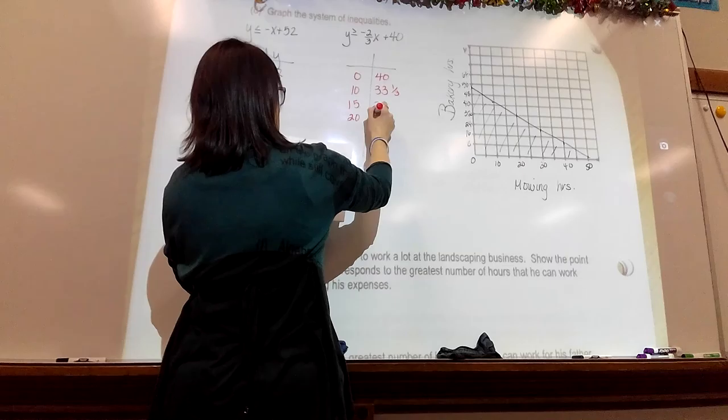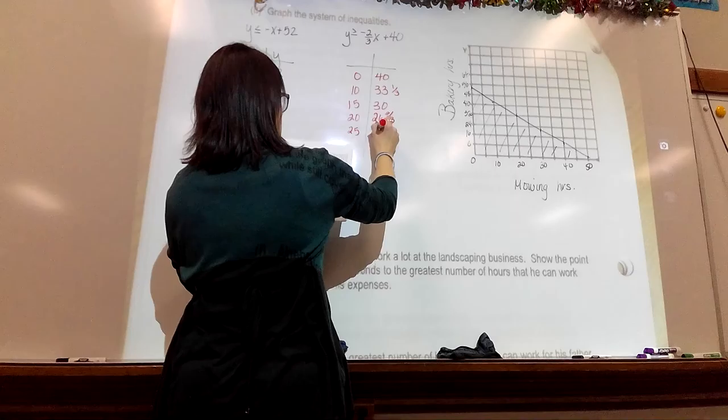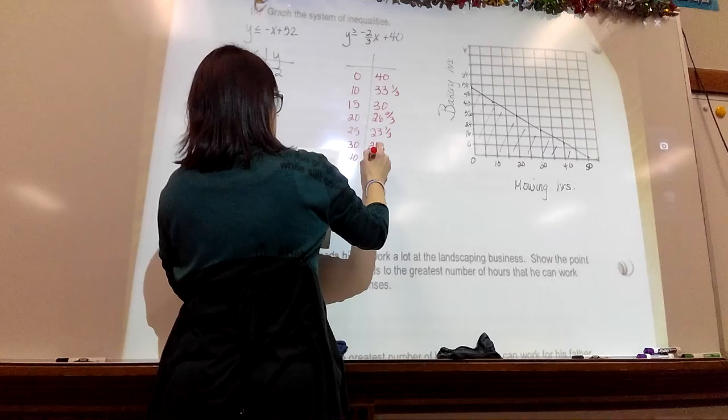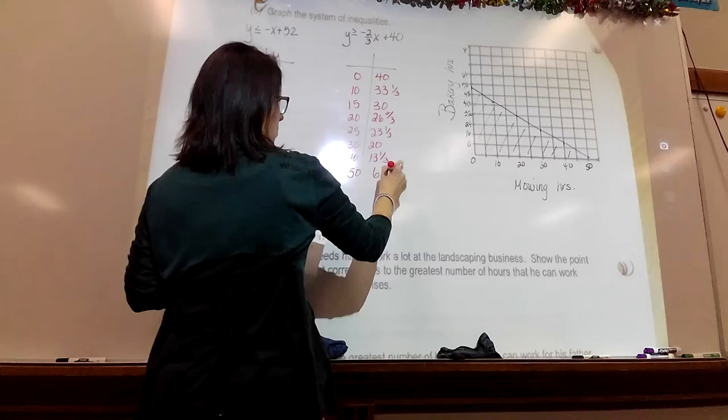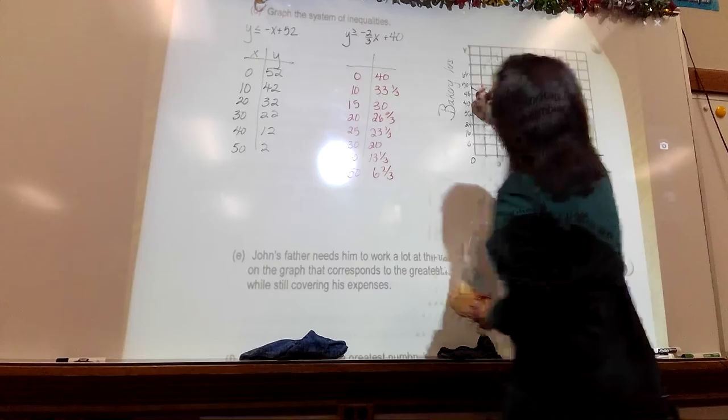I looked for nice numbers that I was able to approximate. 20 is 26 and 2 thirds, 25 is 23 and 1 third, 30 is 20, 40 is 13 and 1 third, 50 is 6 and 2 thirds.